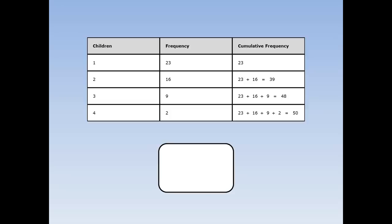Next, we take the number of people and add 1 to it. 50 plus 1 equals 51. Then we divide this by 2. 51 divided by 2 is 25.5 — this is the midpoint. Next, we look at the cumulative frequencies and find the first one that's above 25.5. That's here, and that tells us that 2 children is the median.